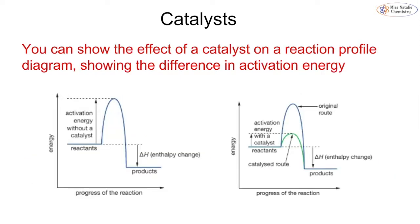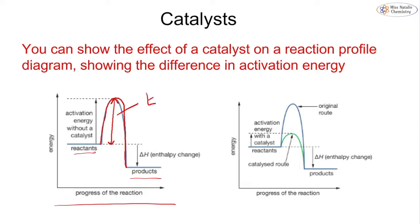We can show the effects of this on a reaction profile diagram. In the first diagram, reactants go up through a curve to a peak and then down to the products. The activation energy is the distance between the top of this curve and the reactants, labeled EA or sometimes just E.